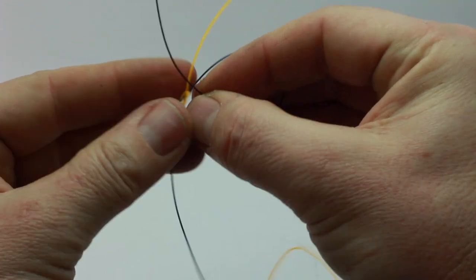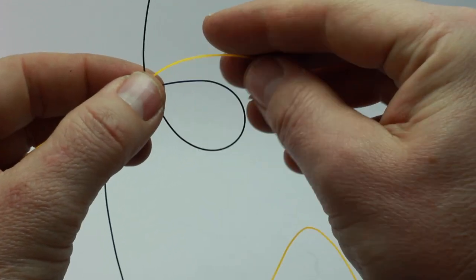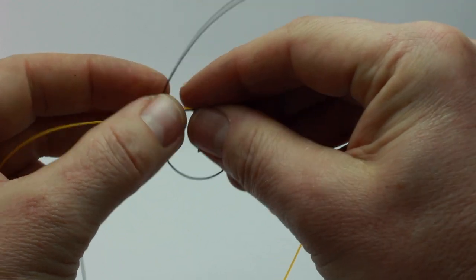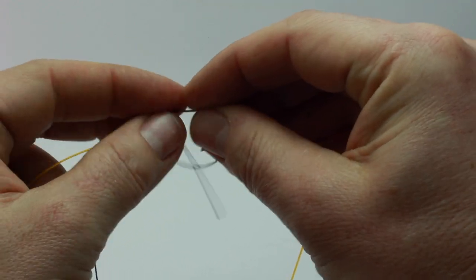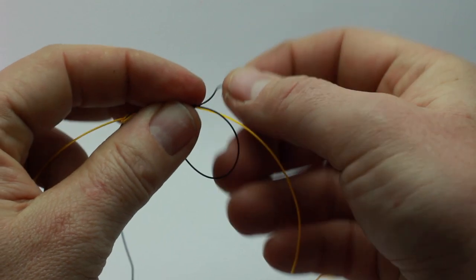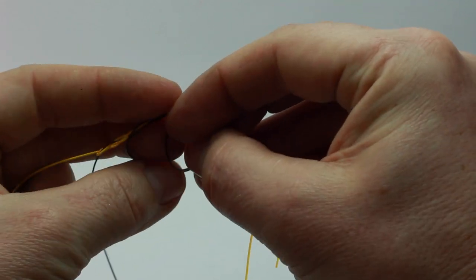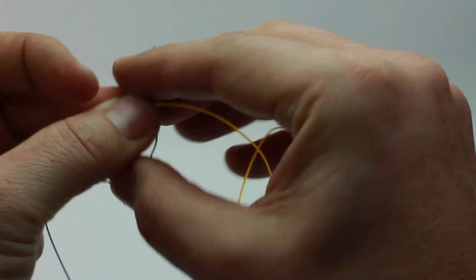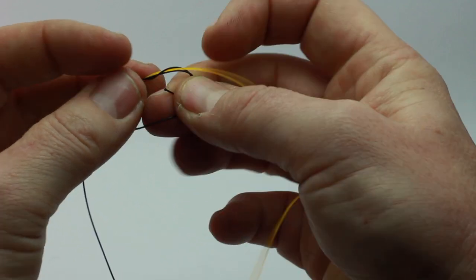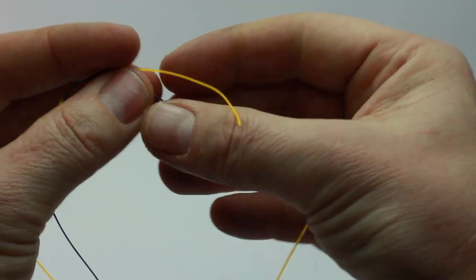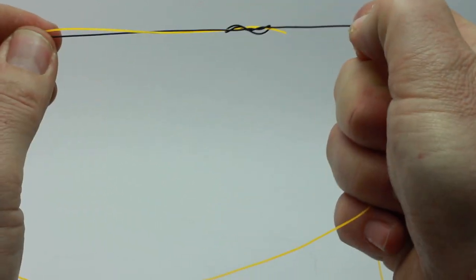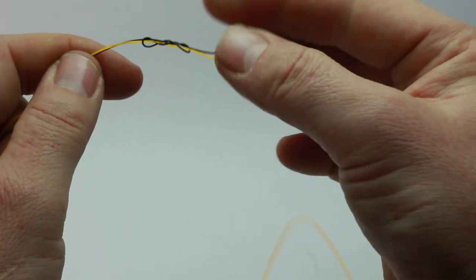Formed that loop there, and then I'm just going to work around four turns back through the hole and pull that tight. Just cut off a bit of yellow line there to see, but that would be on the main rig.